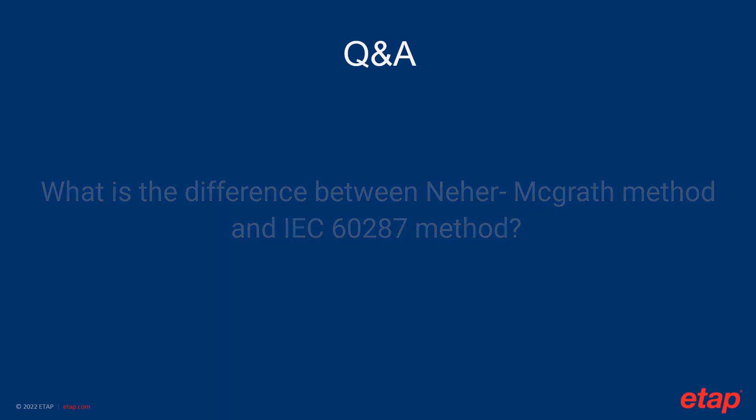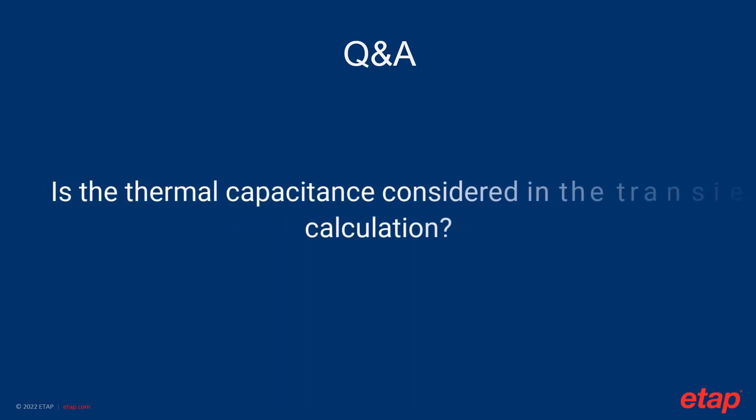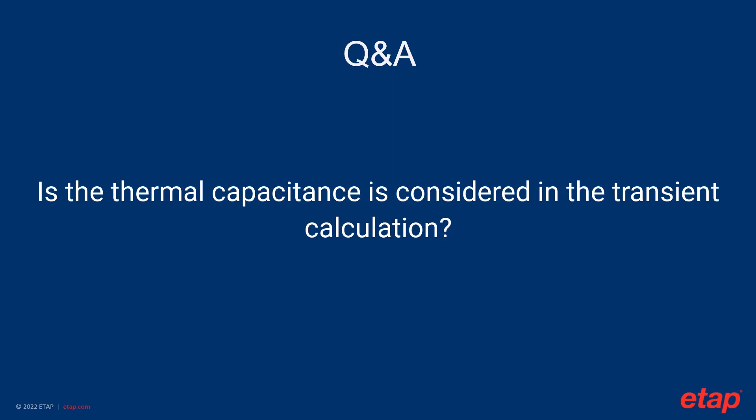The second question: is thermal capacitance considered in the transient calculation? Yes, ETAP does consider thermal capacitance in the transient calculation. Because transient calculation is time-dependent, the existence of thermal capacitance causes a lagging effect on thermal change, and it is required to include thermal capacitance in the transient calculation.